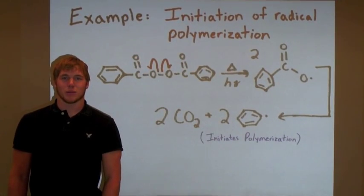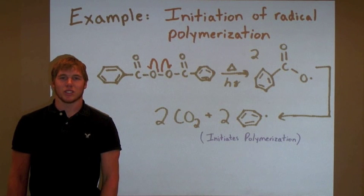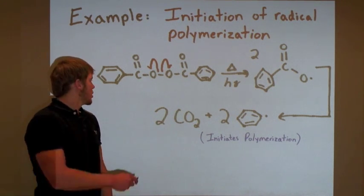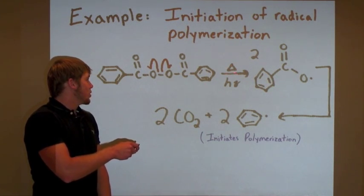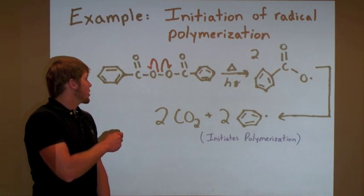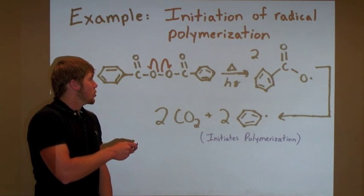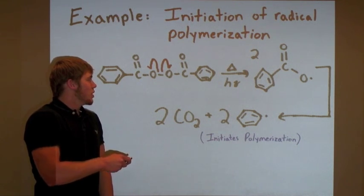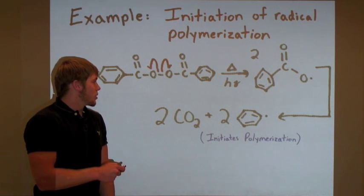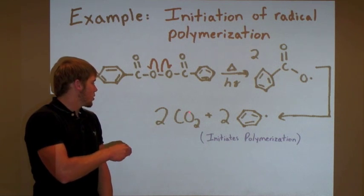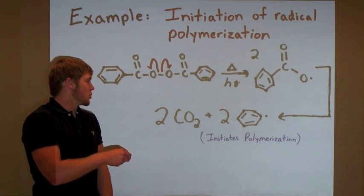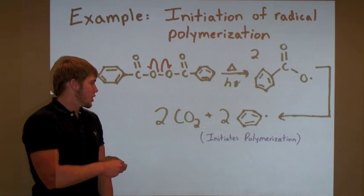As a further example, let's look at radical decarboxylation as it's used in the initiation of radical polymerization. Here, benzoyl peroxide in the presence of heat or light undergoes homolytic cleavage of the weak oxygen-oxygen single bond to yield two benzoyl radicals. These two carboxyl radicals decarboxylate to form two carbon dioxide molecules and two phenyl radicals, which then may initiate polymerization.